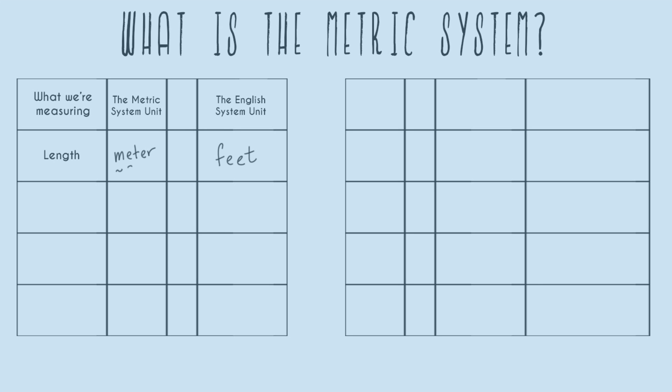A meter is about three feet. In the countries where the English system was developed, they decided to use feet, and in the countries where the metric system was developed, they decided to use meters. There is no difference in concept — that's true for all of these measurements. Abbreviations are really important in the metric system. For meters, the abbreviation is a lowercase m, similar to how FT is the abbreviation for feet.